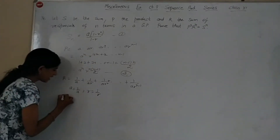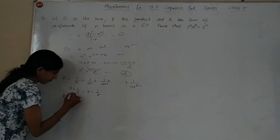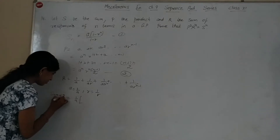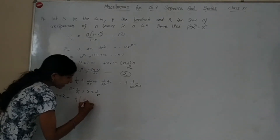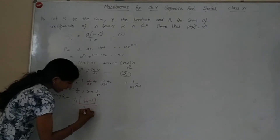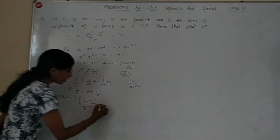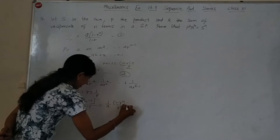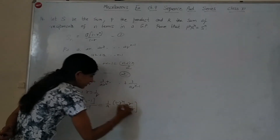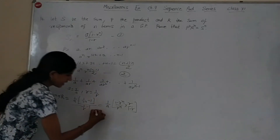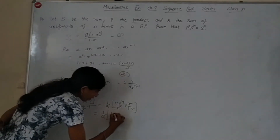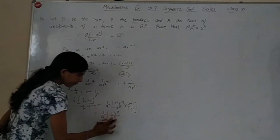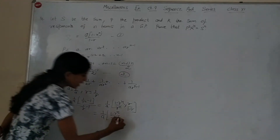So R = (1/a) · (1 - (1/r)ⁿ) / (1 - 1/r). Simplifying: R = (1/a) · (1 - r^(-n)) / (1 - r^(-1)), which gives R = [1/a] · [(1 - rⁿ) / rⁿ] · [r / (1 - r)] = (1/a) · (1 - rⁿ) / (r^(n-1) · (1 - r)).